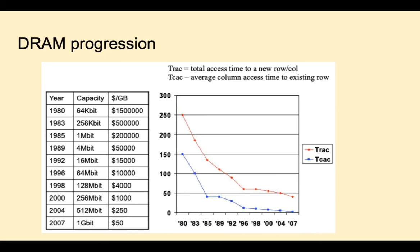This table and chart shows the progress made in DRAM manufacturing from 1980 to 2007. Notice that the capacity goes up and the cost goes down. Access times have fallen exponentially during this time frame as well.